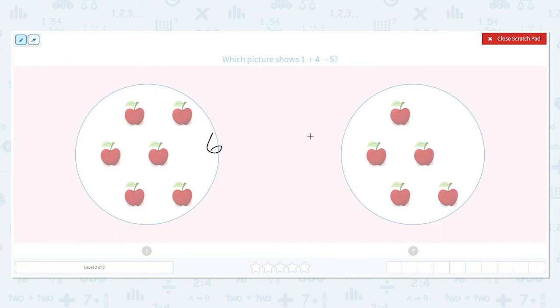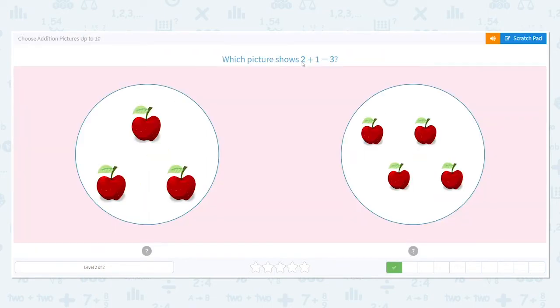Now how about on this side we have 1, 2, 3, 4, 5 apples. So if we want the total number of apples to be 5, which side is our answer? The one with 6 apples or 5 apples? Right, the one on the right, 5 apples. Let's do another one.